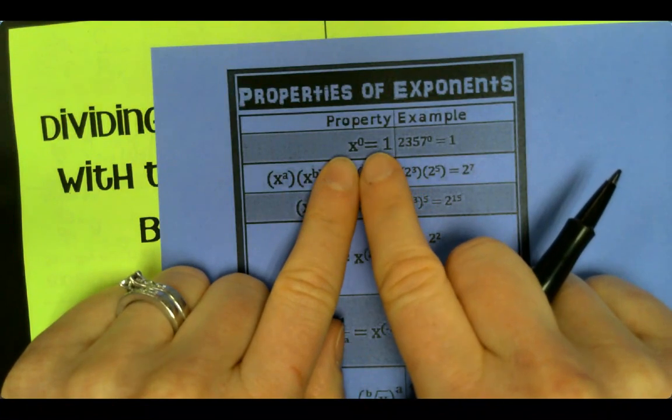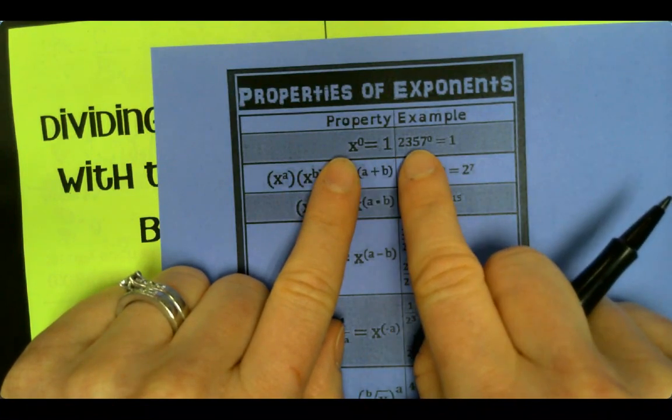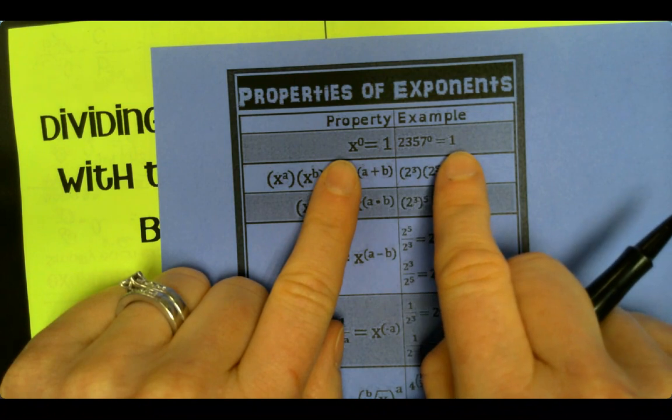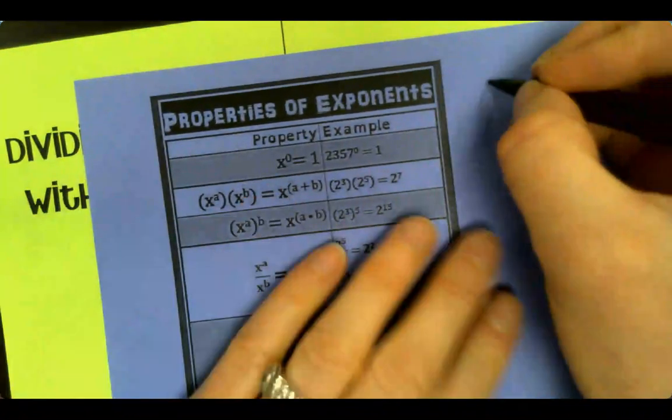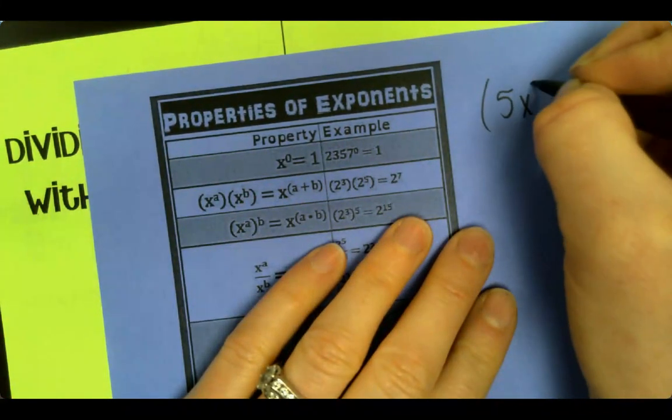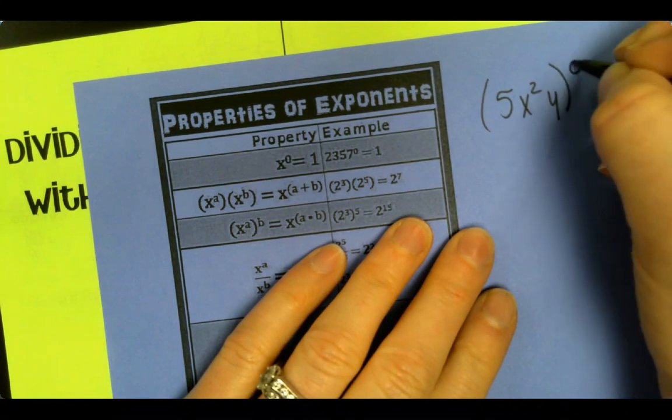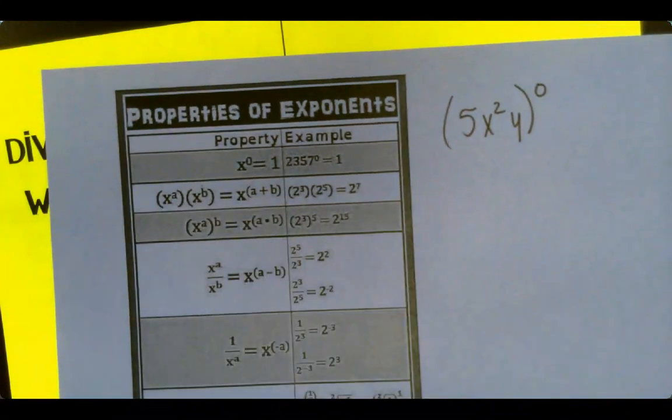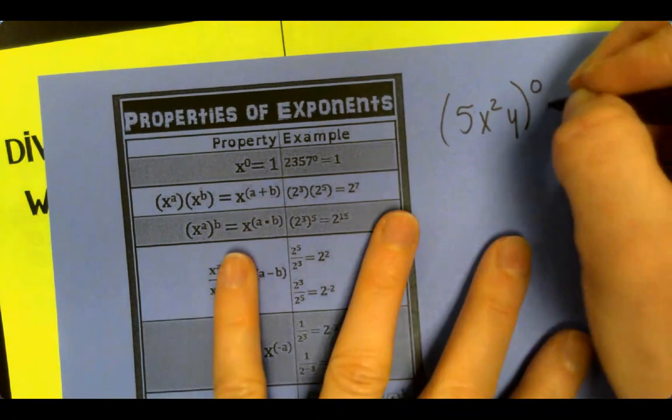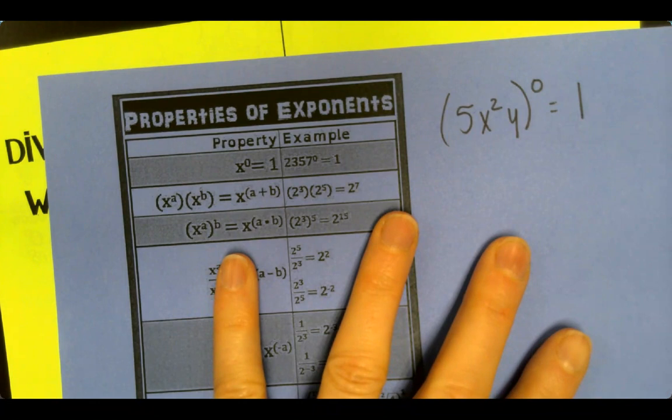Alright, anything to the zero power equals 1. It doesn't matter what the number is, it equals 1. Let's say it is 5x²y all to the zero power. Anything to the zero power is going to equal 1. It doesn't matter what it is.